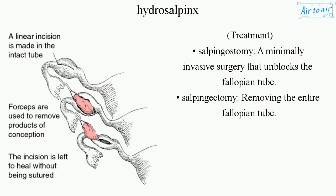Treatment: Salpingostomy — a minimally invasive surgery that unblocks the fallopian tube. Salpingectomy — removing the entire fallopian tube.